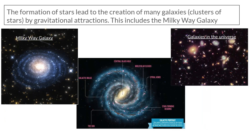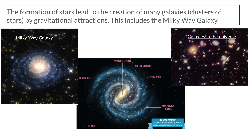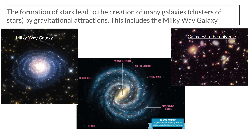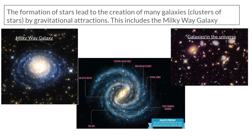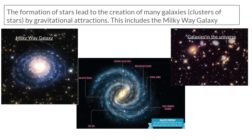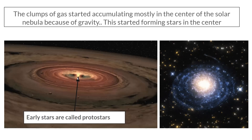The formation of stars led to the creation of many galaxies, because galaxies are clusters of stars, and this is because of gravity once again. This includes our galaxy, the Milky Way galaxy. The Milky Way galaxy has a black hole in the center, with a cloud of gas surrounding it that's spiraling or rotating. These gases also contain billions of stars. Our star — the sun — was also forming around this time.